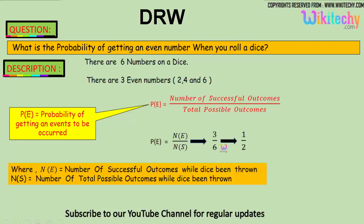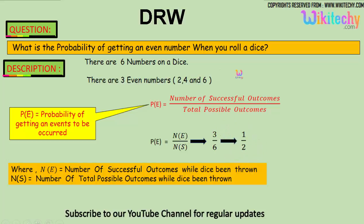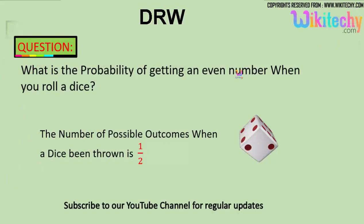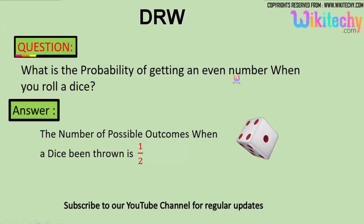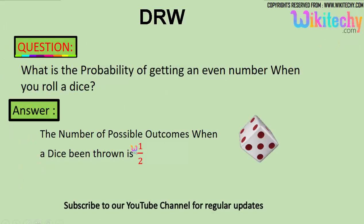3 is the number of successful outcomes, divided by the total possible outcomes which is 6. So 3 divided by 6 gives you 1/2. The probability of getting an even number when you roll a dice is 1/2. That's the answer.